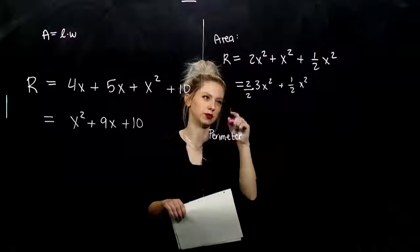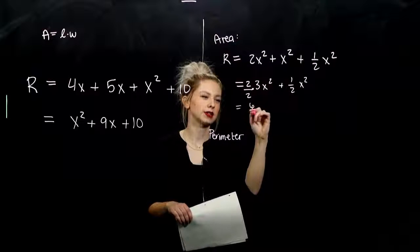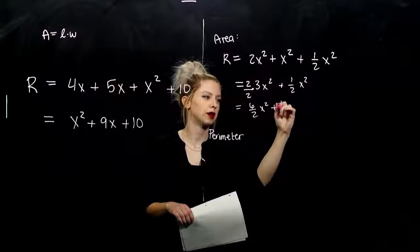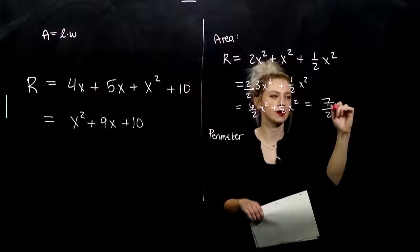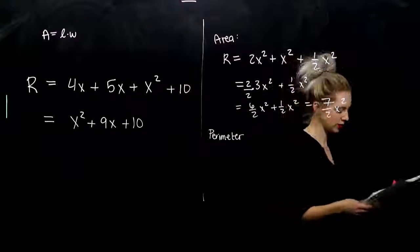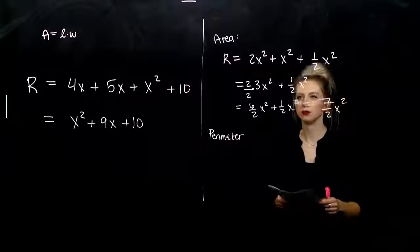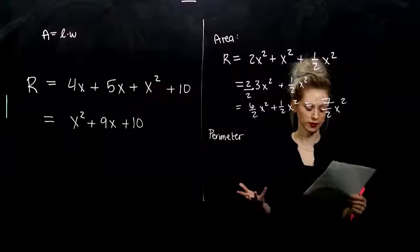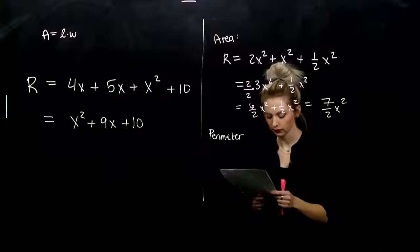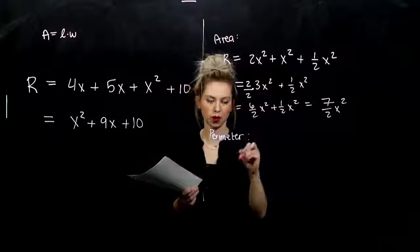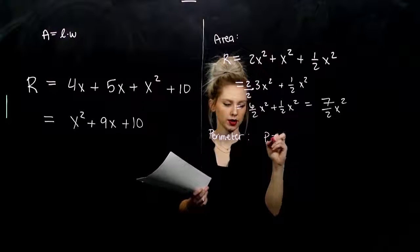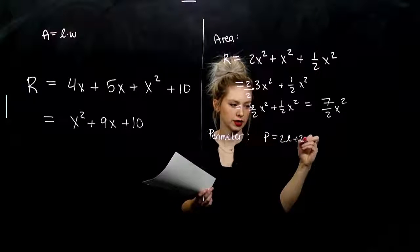So over here I'm missing a 2 down below. What I do to the bottom, I have to do the top. So I've got 6 halves X squared and I'm adding one half. So altogether we have 7 halves X squared. Represents the area of the sum of those rectangles. And for the perimeter, what does it mean to be the perimeter? Adding up all the sides.